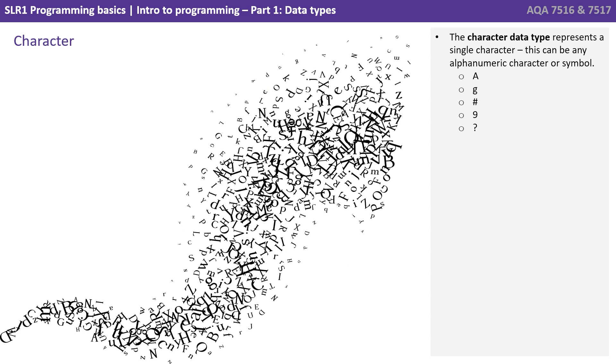Next, we have the character data type. This represents a single character. This can be any alphanumeric character or indeed a symbol such as a question mark or a hashtag.